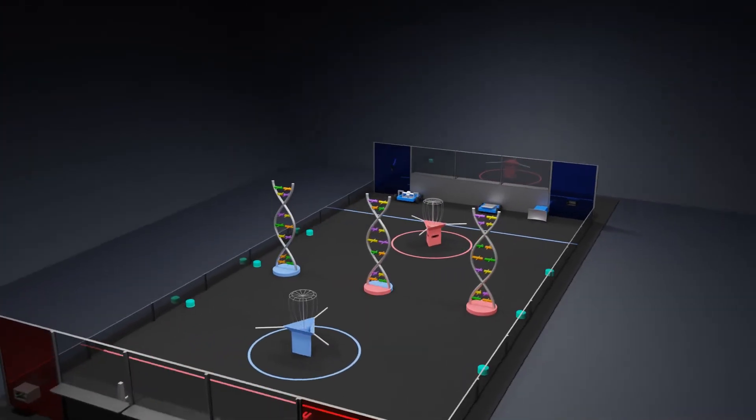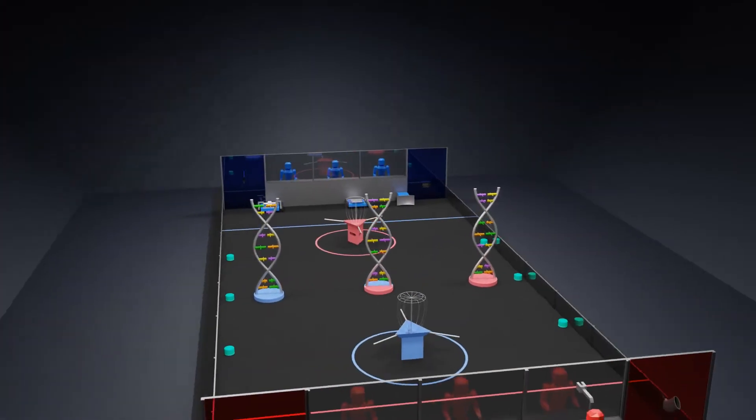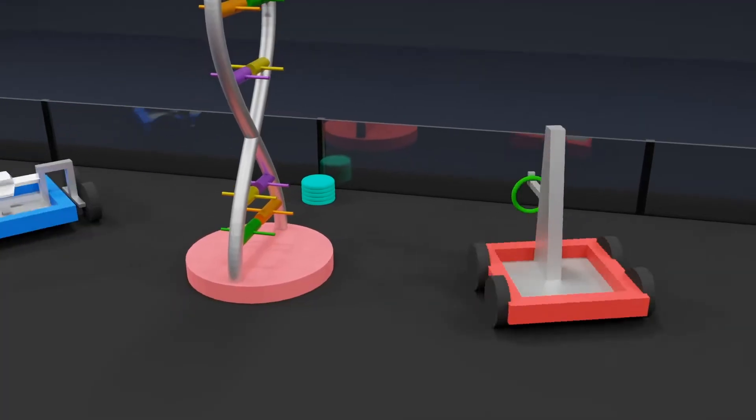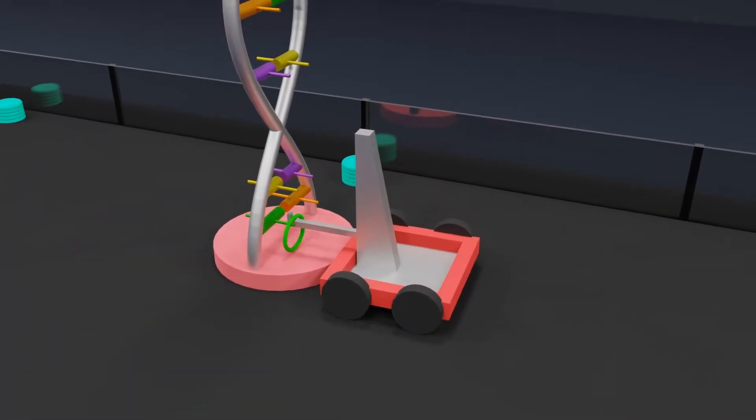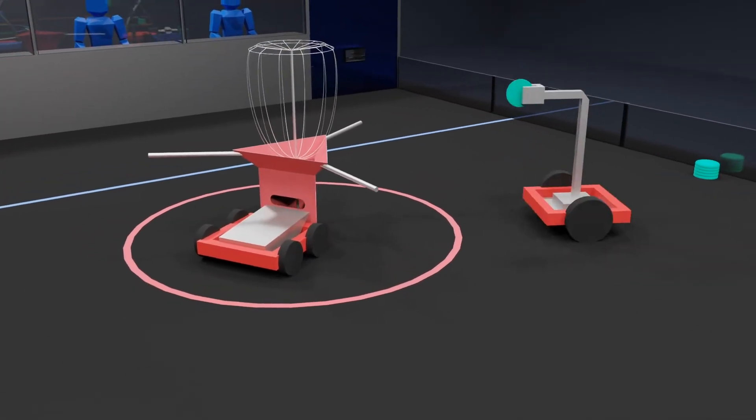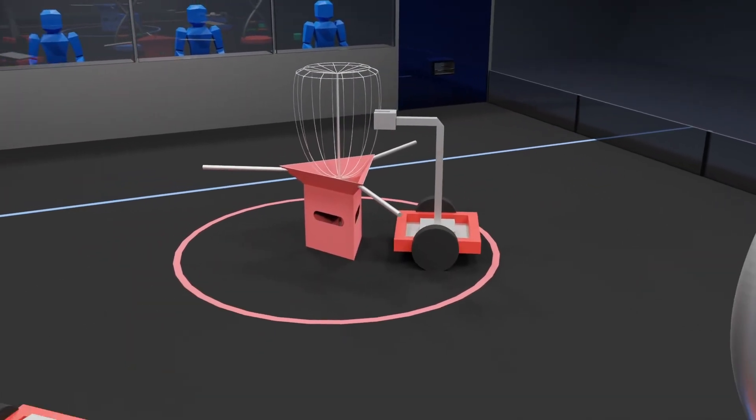Two alliances of three nanobots each race to repair DNA helices and deliver aminos to prepare protein for transport. Nanobots score points by placing nucleotides on the DNA helices and shooting aminos into ribosomes that are on the side of the field opposite their alliance station.